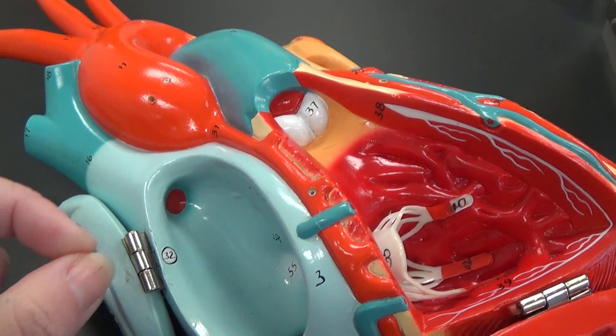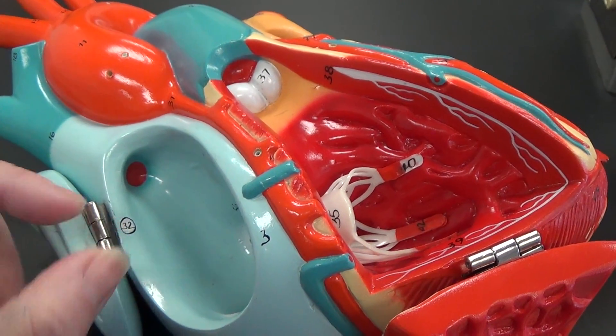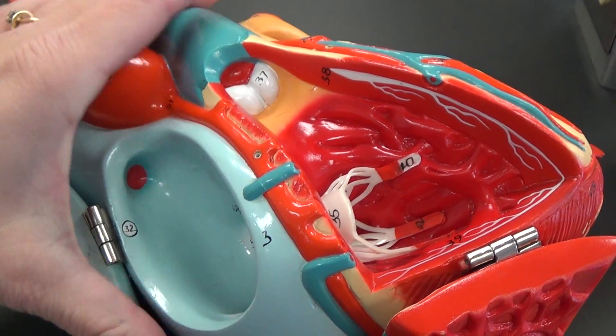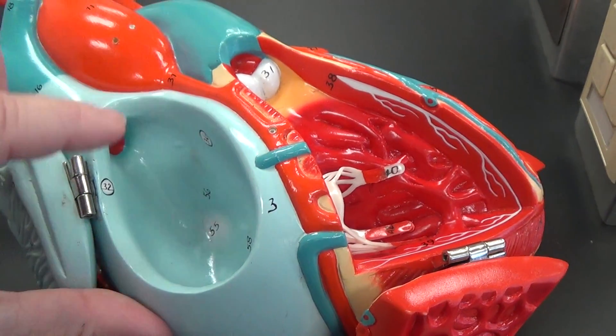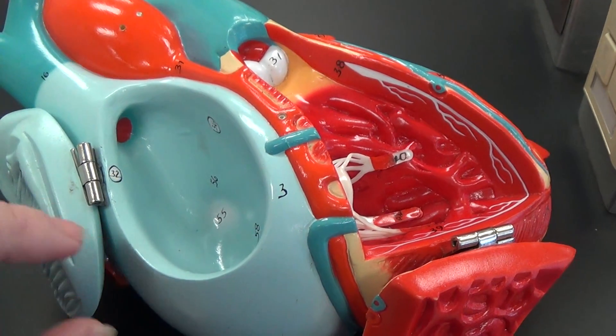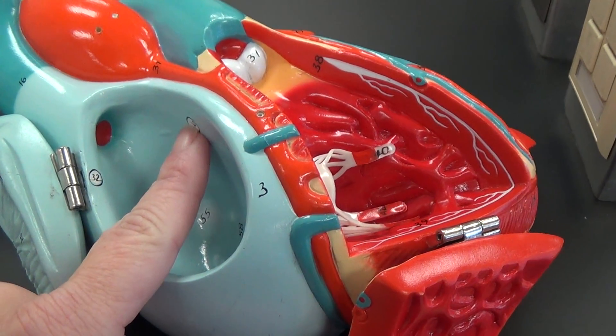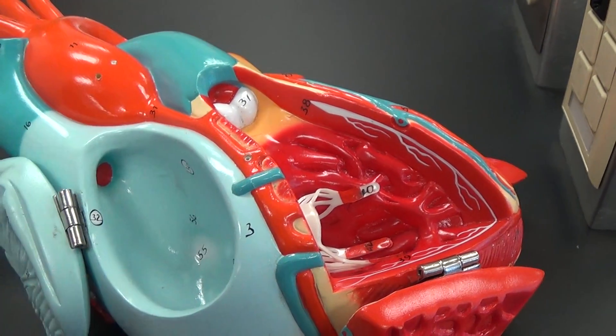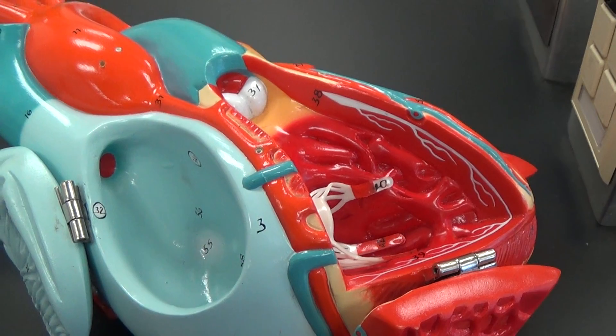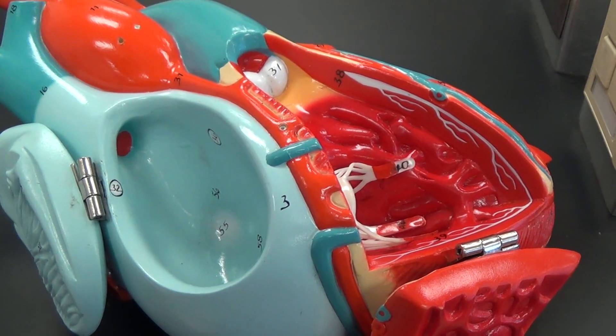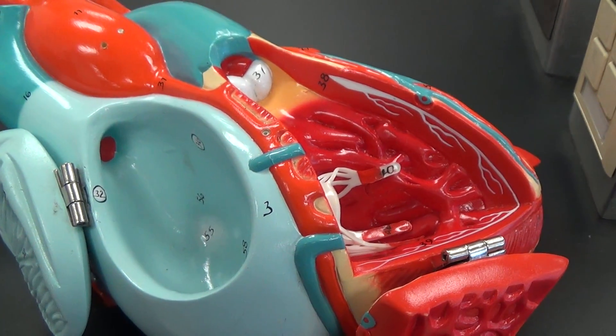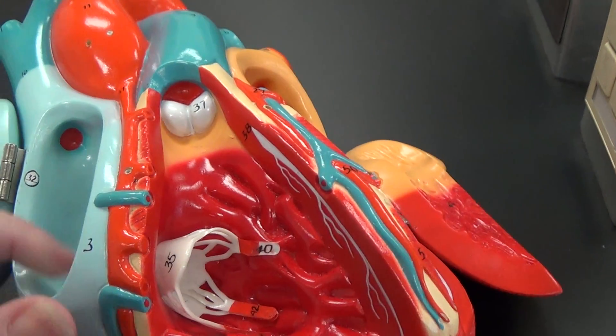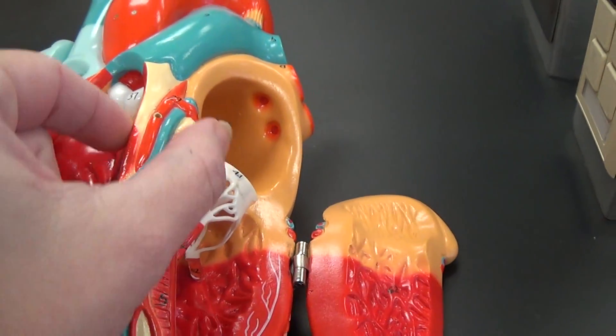The SA node will start an impulse, and this impulse will go to the atrial syncytium, both the left and right atria. That system will then collect the impulse and pass it to this AV node. There is a skeleton of the heart, and the skeleton of the heart has a lot of connective tissue, which will not pass the signal on. So the AV node has a little connection piece into the interventricular septum that we see over here.